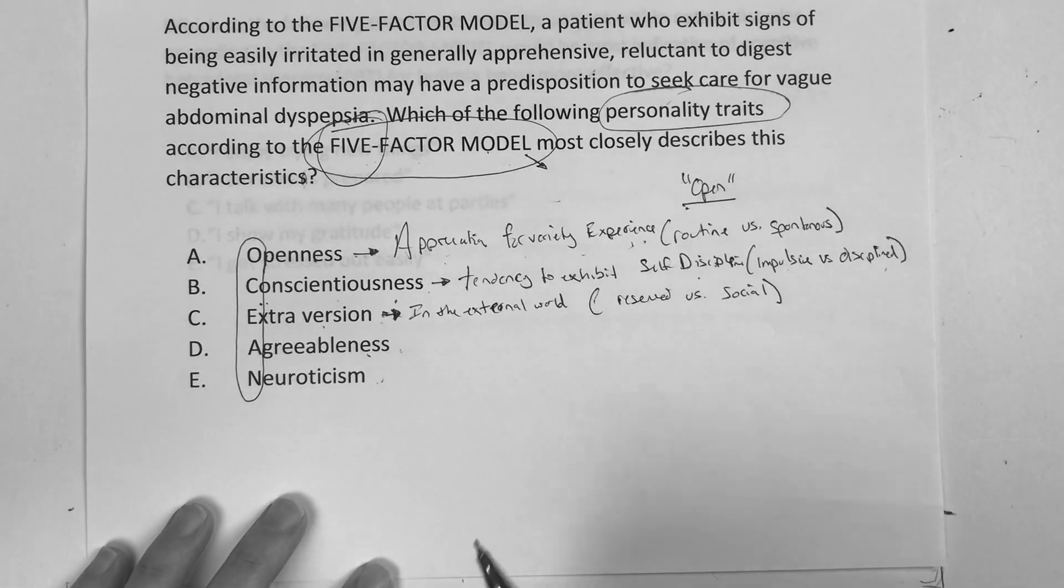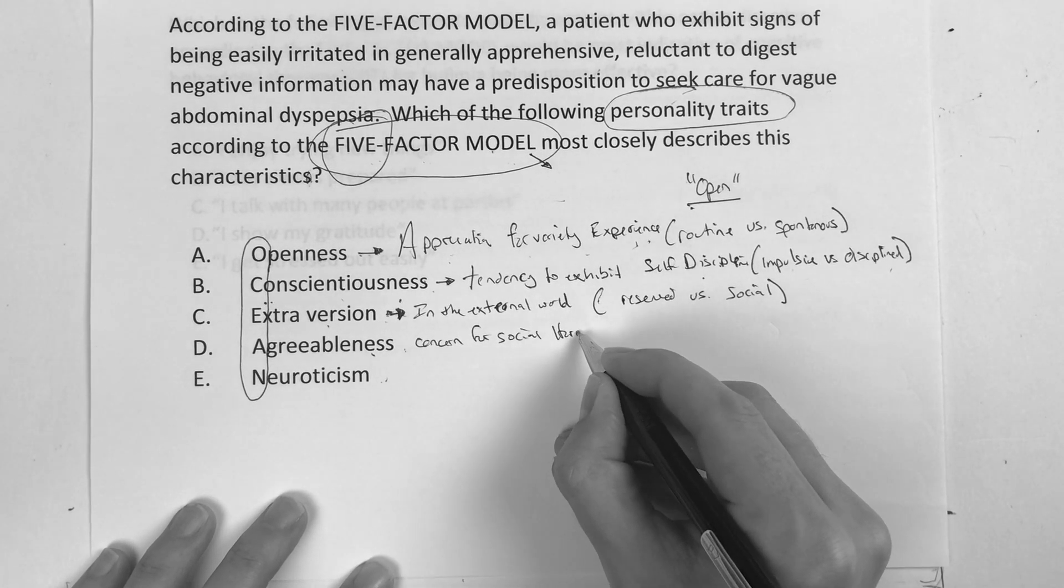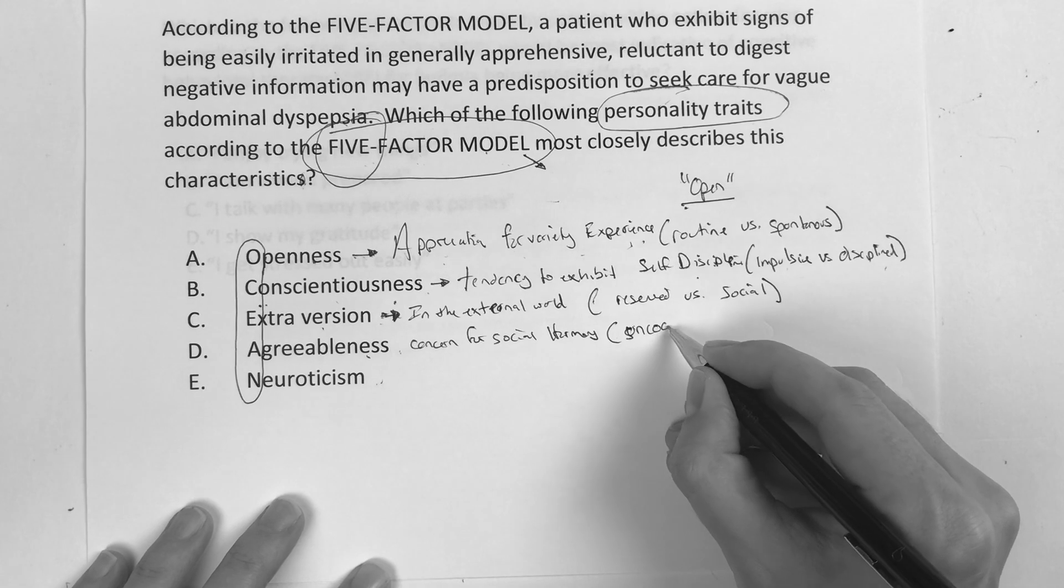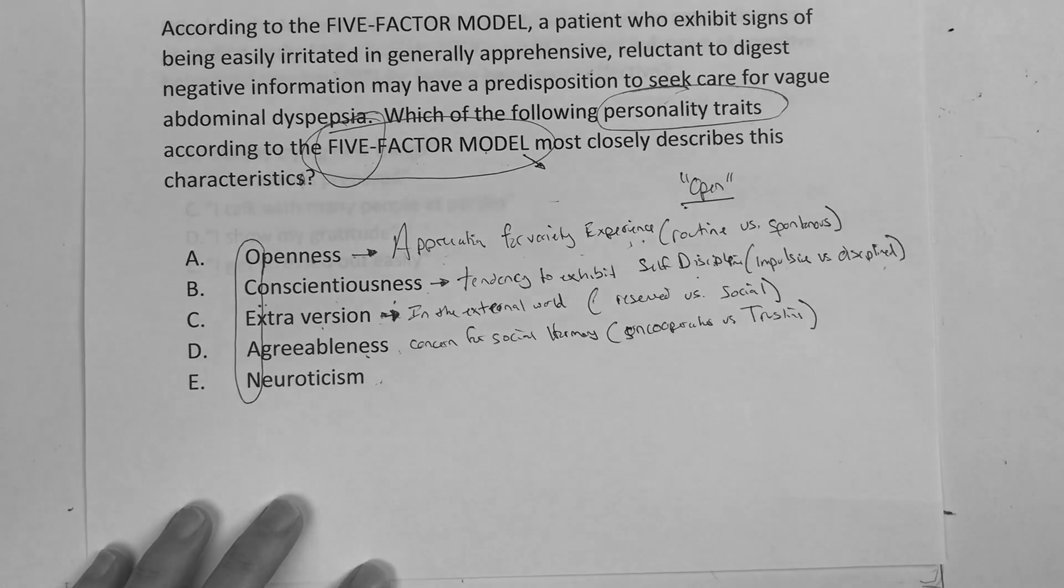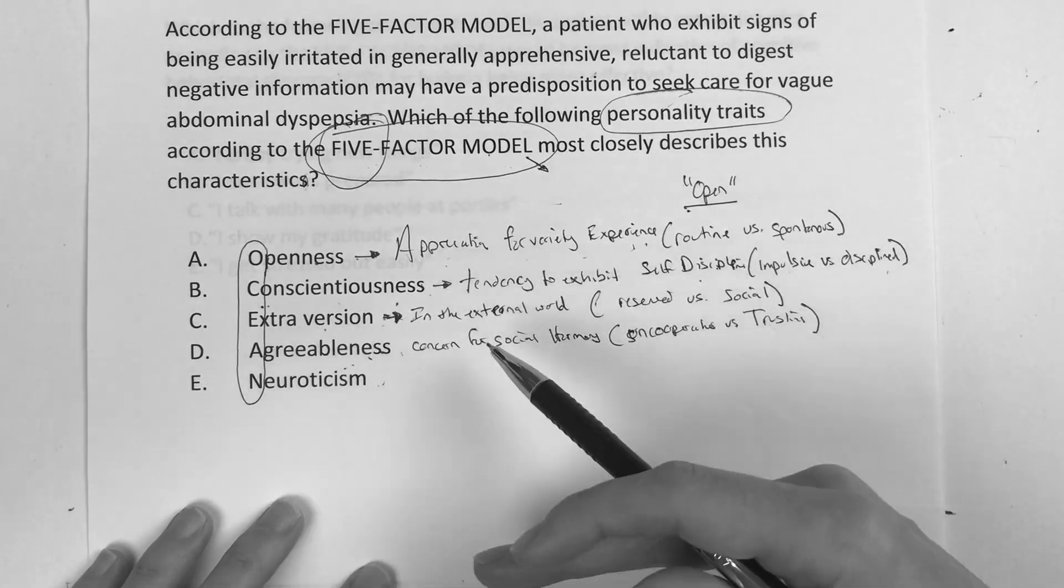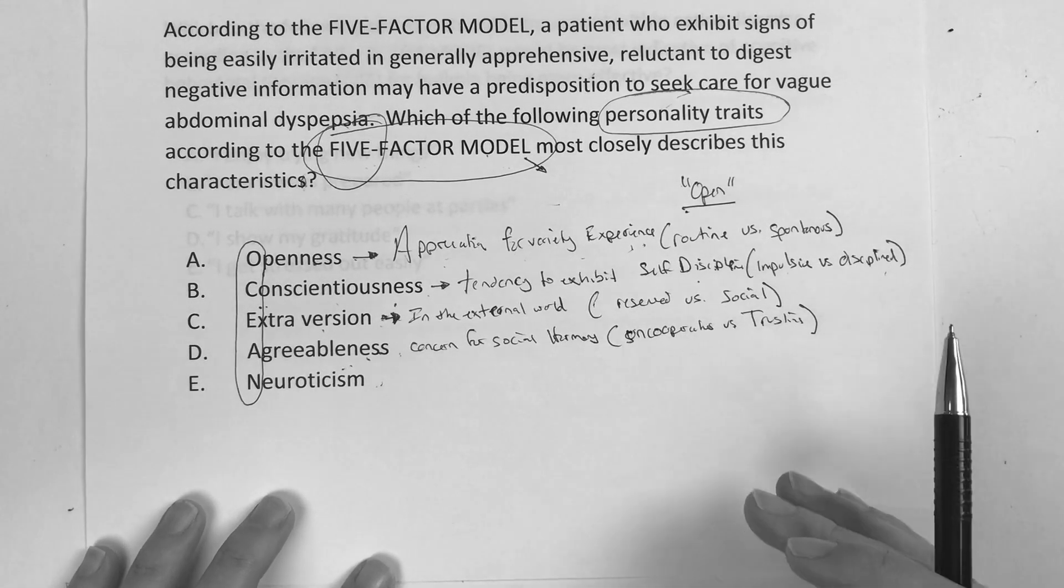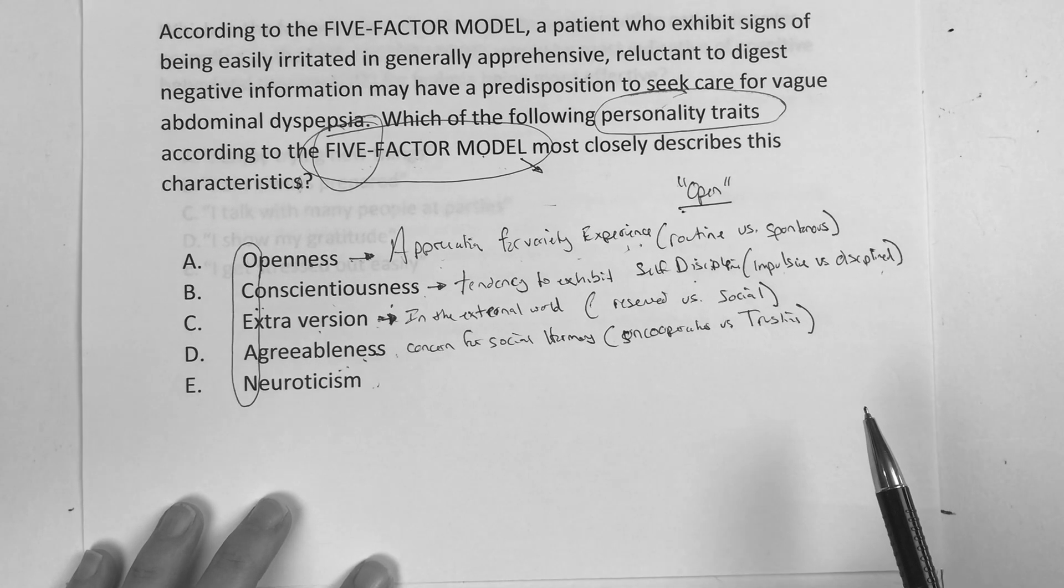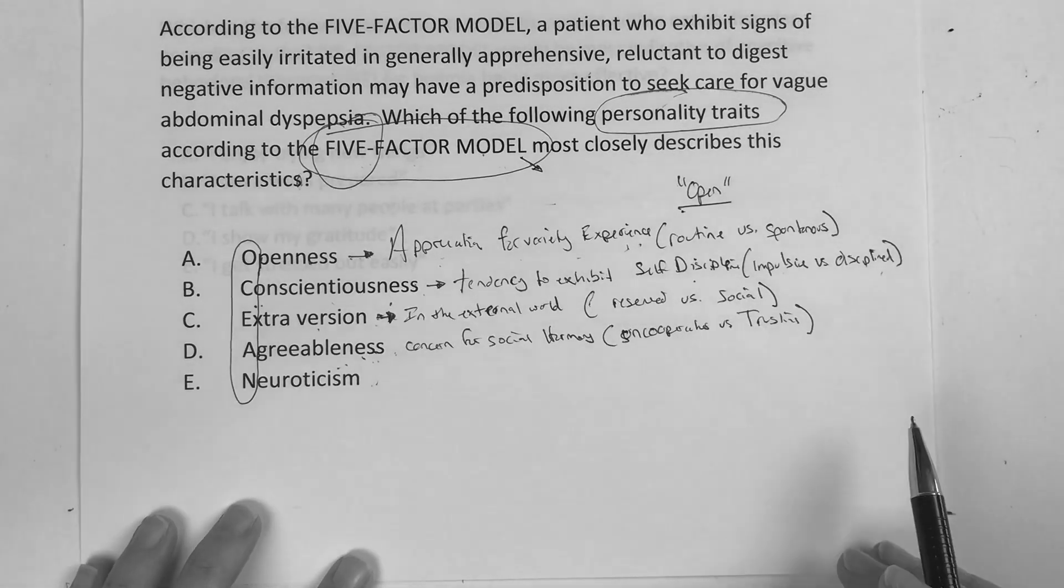The next one is agreeableness. And that's basically someone's concern for social harmony. And are you uncooperative or suspicious versus trusting and helpful? And really agreeableness, it's interesting. The people who, the research actually says the people who kind of go further, who make actually make good leaders, are the ones who aren't always as agreeable. You always know that person who's like kind of a yes man. They'll do anything thinking that's going to help them, but actually it's the people who give a little pushback. They're the ones that actually achieve a little bit higher in the business ladder, per se.